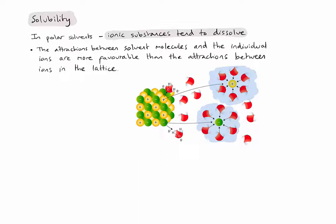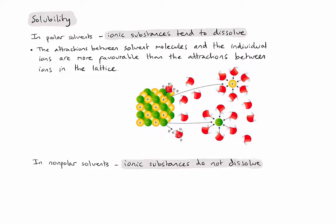Because these interactions are more favorable than the attractions between the ions in the lattice, the whole ionic substance will be separated into its individual ions that can then move freely in solution surrounded by water molecules. In a non-polar solvent, there are no attractions between the solvent molecules and the ions, so ionic substances tend not to dissolve — there are simply no favorable interactions occurring.